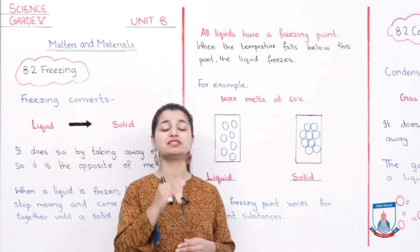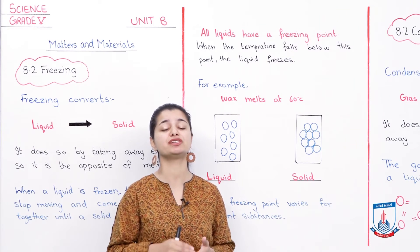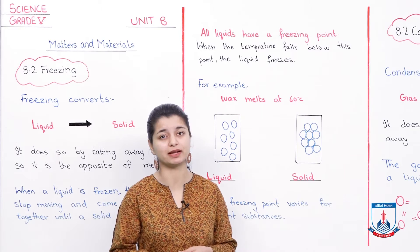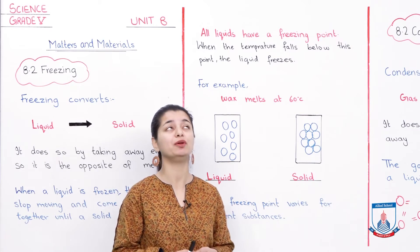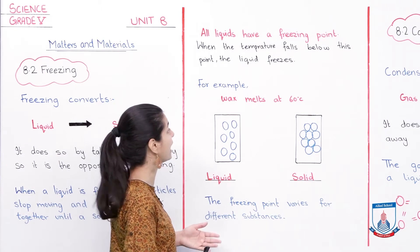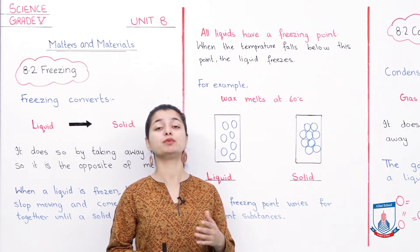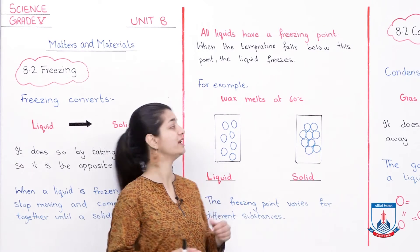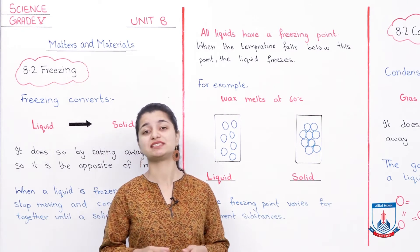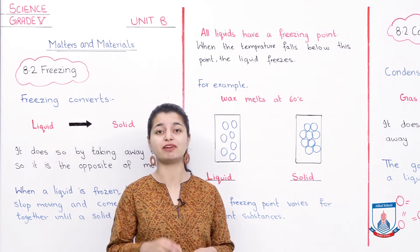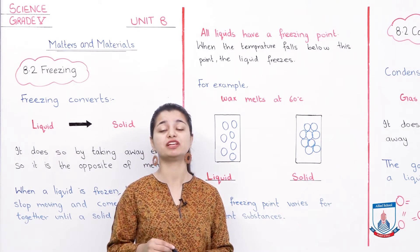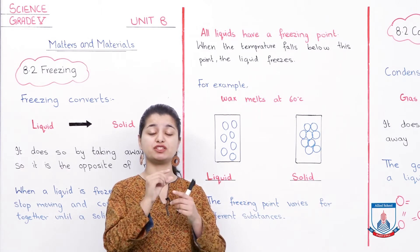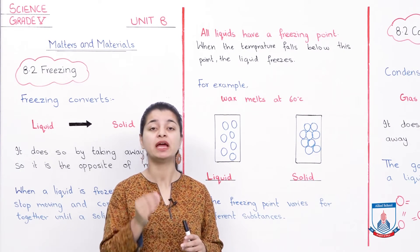The substance starts to freeze at the freezing point. For example, as I gave you in the last class — the wax example. Wax melts at 60 degrees. When you apply a flame to the wax, it starts to melt at 60 degrees.